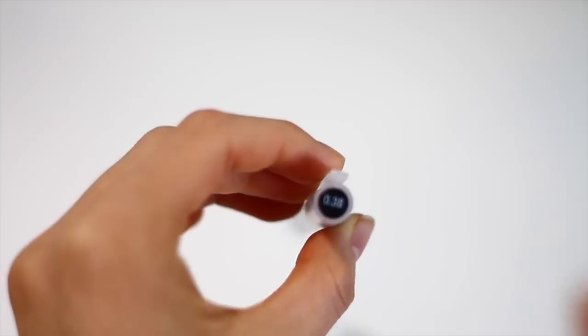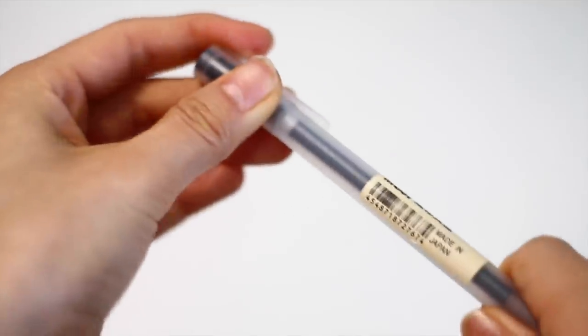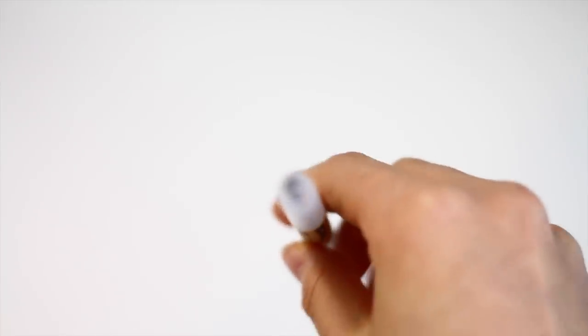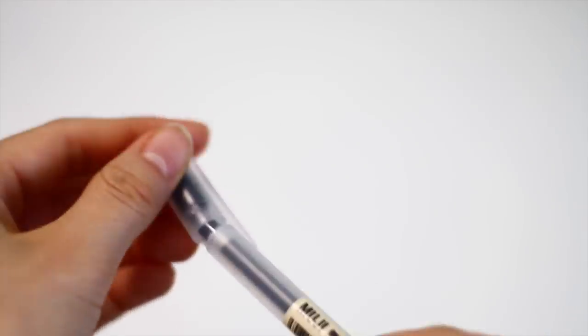And the last writing utensil I keep in my pencil case for school is the 0.38 black Muji gel pen. This is the one I use to write the majority of the context of my notes. So anything apart from colored ink is written with this pen.